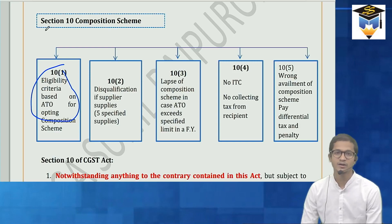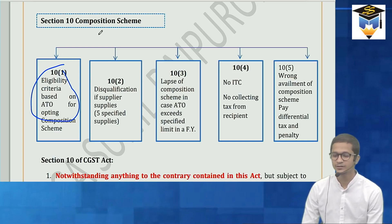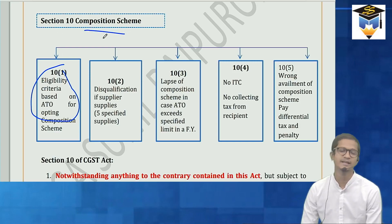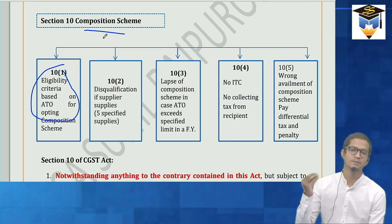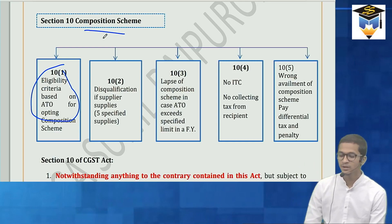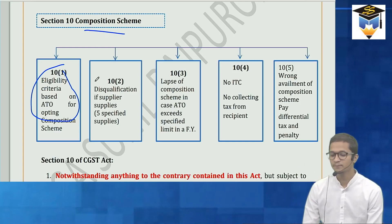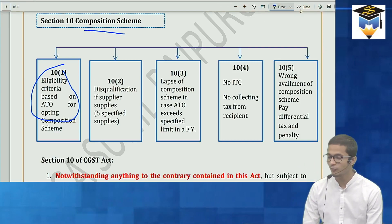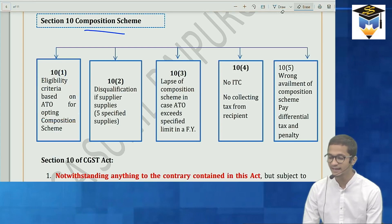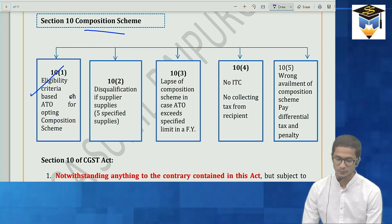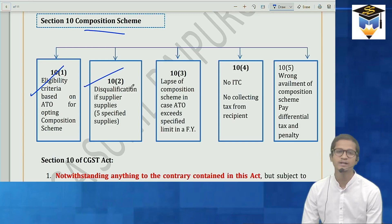In your CGST Act, section 10 has five subsections related to composition scheme. The first subsection talks about eligibility and criteria for opting composition scheme. Subsection 2 talks about disqualification.